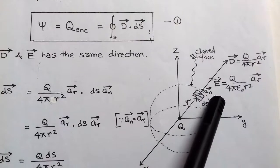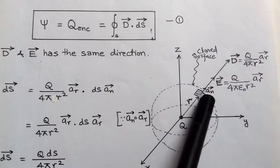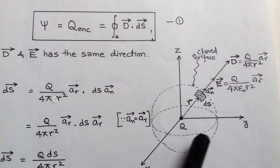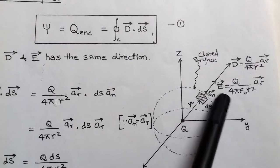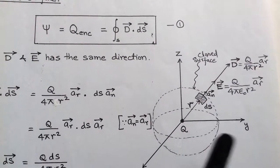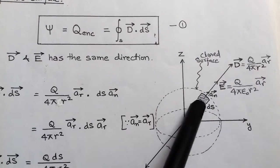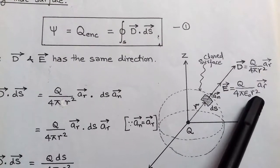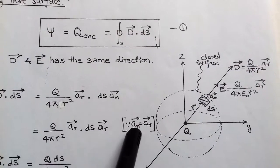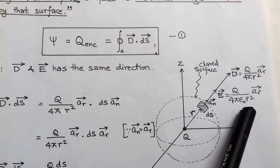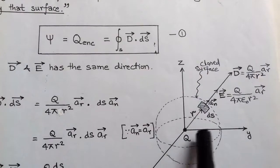This differential surface dS has a direction — the normal unit vector. Due to this charge there is an electric field intensity at the point dS, and this electric field intensity is equal to q upon 4 pi epsilon-0 r-squared in the direction of unit vector r. This unit vector r is in the normal direction, same as the normal direction.